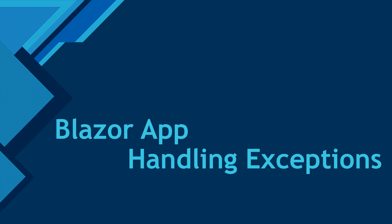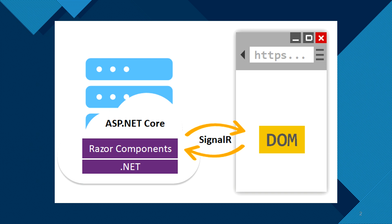Today I'm going to talk about how we can handle exceptions in a Blazor app. It's a little tricky because Blazor makes a SignalR connection with the browser and uses that connection to perform all operations. Whenever an exception happens, it breaks that circuit and then the user cannot do anything until they reload their browser. When they reload, the server makes another connection and you can use your Blazor application again.